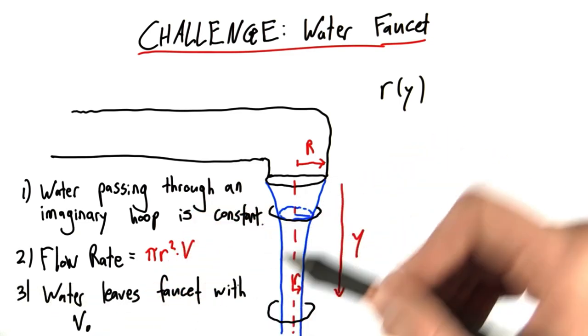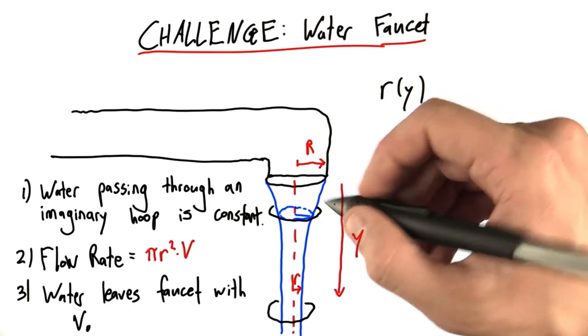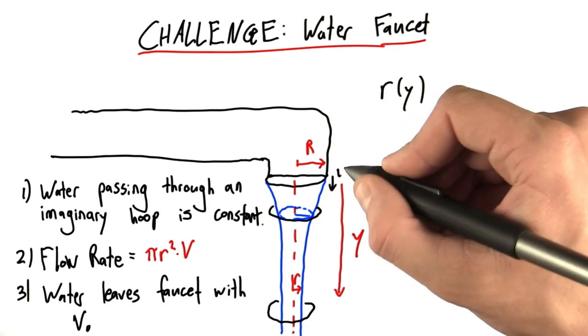Third, we have to assume that the water, when it leaves the faucet, already has some velocity. It's moving downwards at v0.